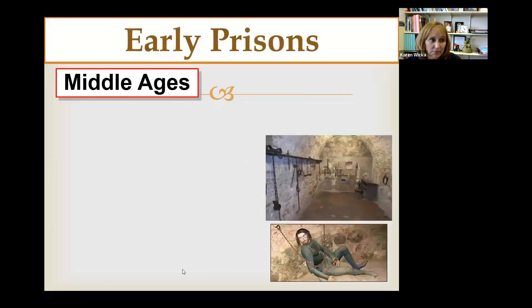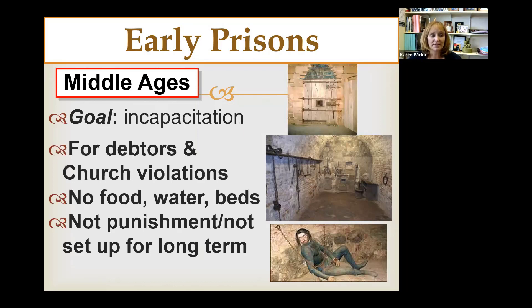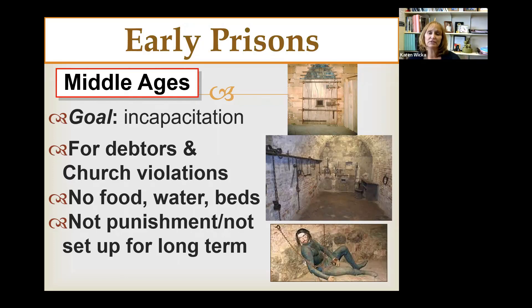So early prisons — that's where we start. The very first prisons that came about were really for debtors or church violators. In the Middle Ages, jails were rarely used and only for very short periods of time. They weren't really for punishment; they were just built to hold people while they awaited other forms of punishment — which were often very torturous.